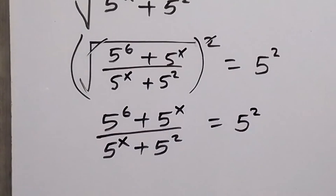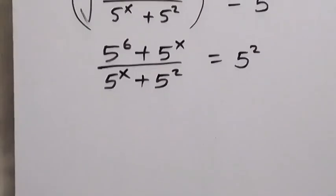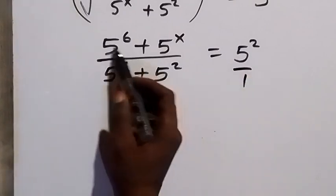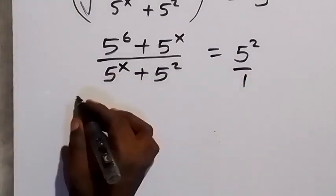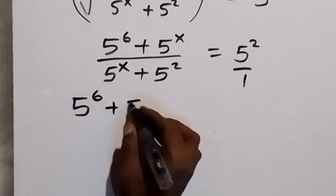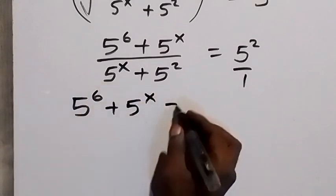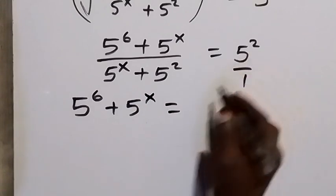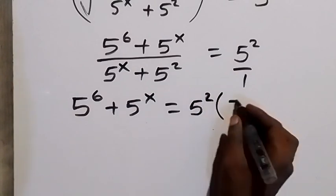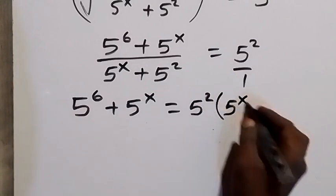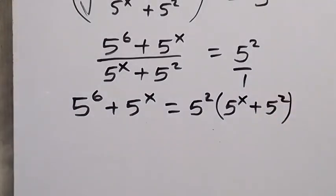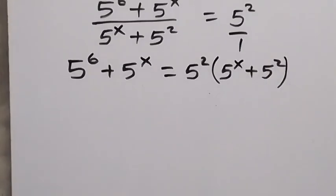From here, in the next step we can cross multiply. So we have 5 raised to power 6 plus 5 raised to power x equals 5 raised to power 2 multiplied by 5 raised to power x plus 5 squared.